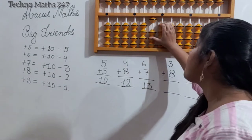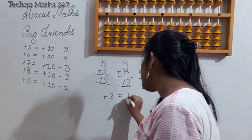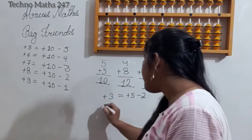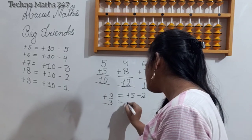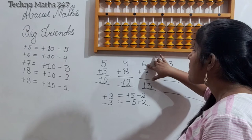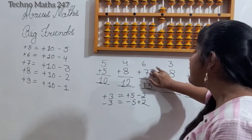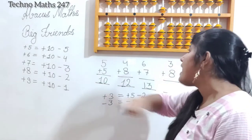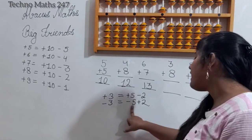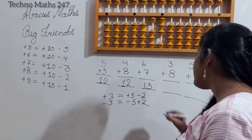Let me explain how 13 is possible. In small friends, we learnt that plus 3 is equal to plus 5 minus 2, and conversely, minus 3 is equal to minus 5 plus 2. So here: we enter plus 6 (which is 5 plus 1). For plus 7, the big friend is plus 10 minus 3. We add 10, then for minus 3 we apply minus 5 plus 2 (the small friend). So minus 5 plus 2 gives us the answer of 13.